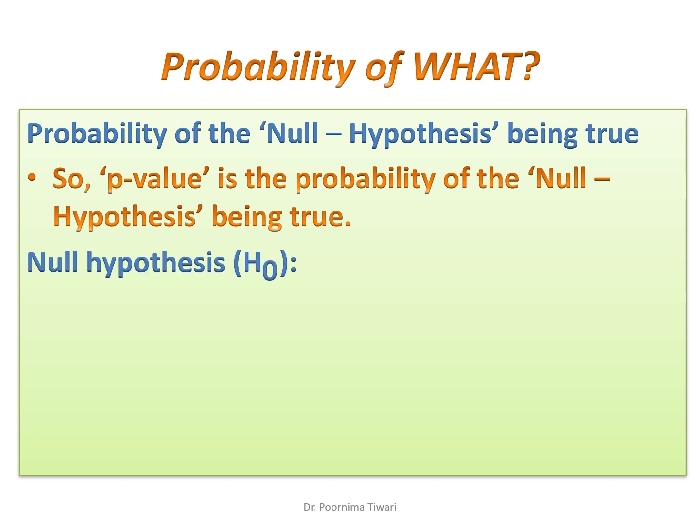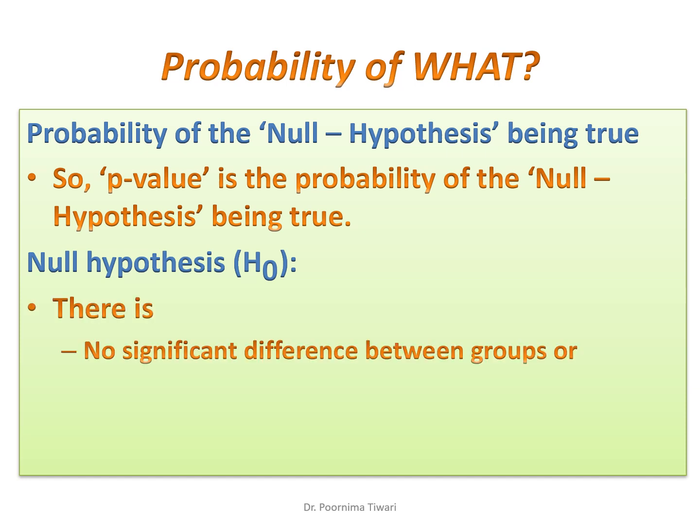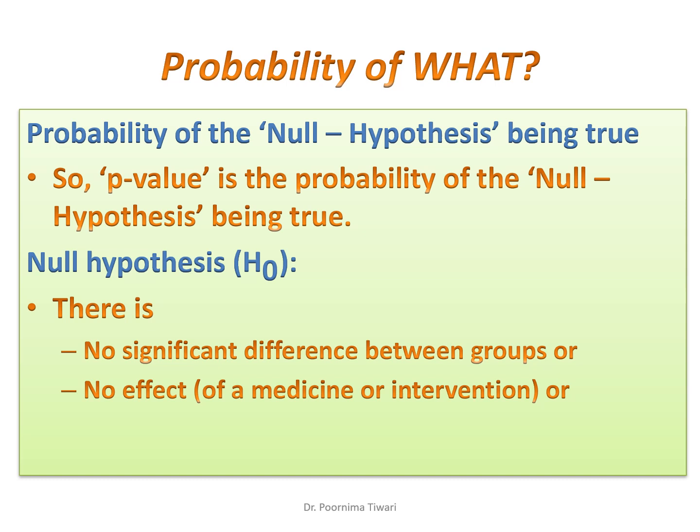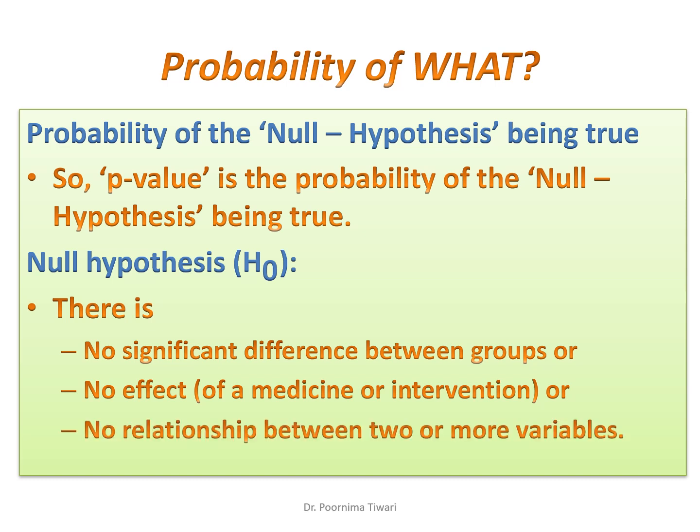But what is null hypothesis? Null hypothesis is an assumption that you begin a research with. If you are comparing two groups, null hypothesis assumes that there is no difference between the groups, and you have to prove the null hypothesis wrong to show that there is a difference. If you are assessing a medicine, the medicine has no effect according to null hypothesis. If you are assessing the relationship between two variables, null hypothesis assumes there is actually no relationship between the two variables.